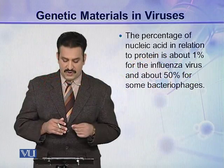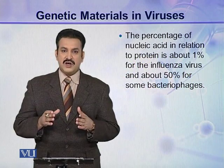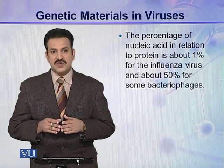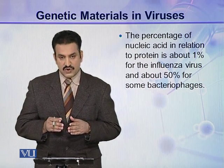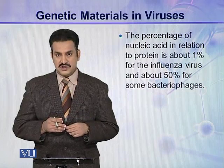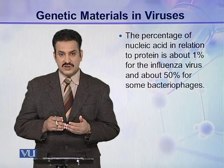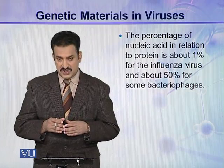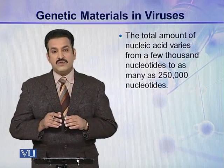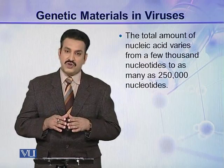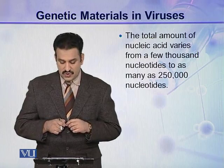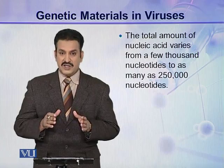If we talk about the percentage of nucleic acid in a virus particle by weight compared to protein, the percentage of genetic material is highly variable. In some viruses, such as influenza, the amount of genetic material is only about 1% compared to protein. While in some other viruses like bacteriophages, the nucleic acid may be up to 50% of the whole virus particle. The total amount of nucleic acid varies from a few thousand nucleotides to as many as 250,000 nucleotides in a single molecule.